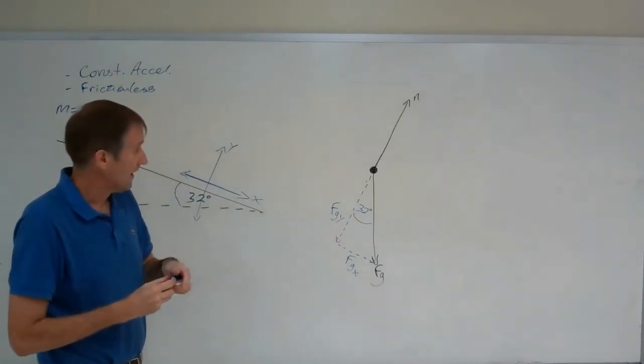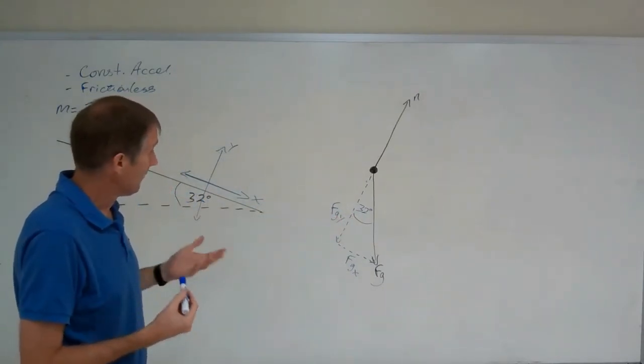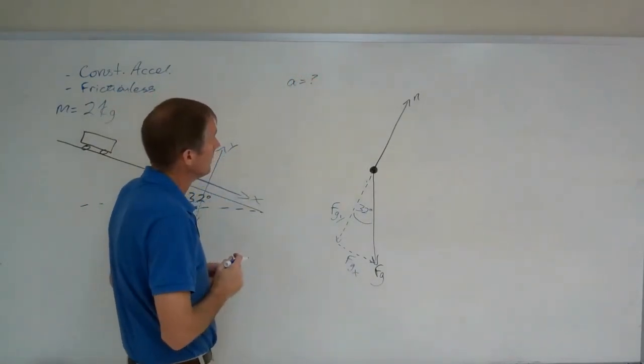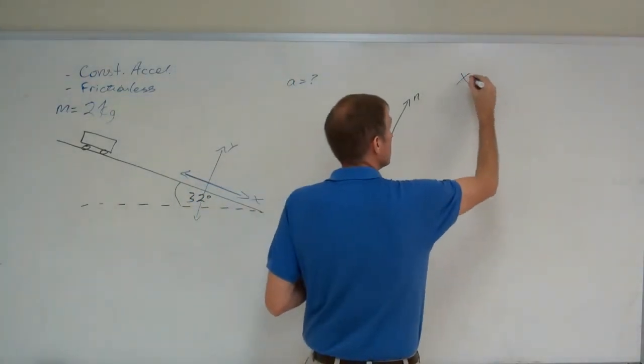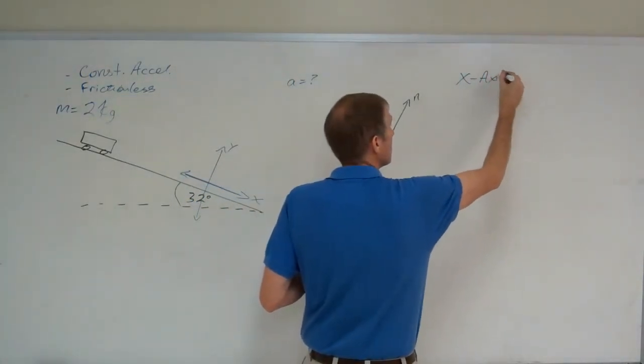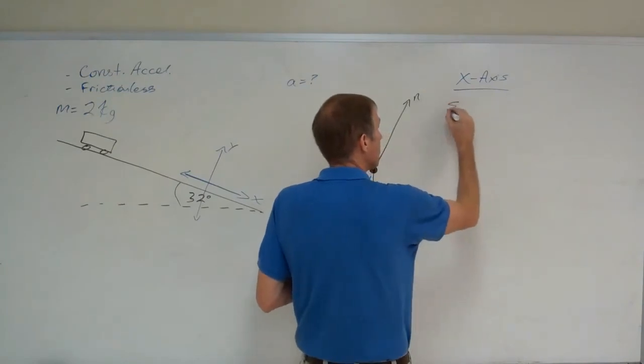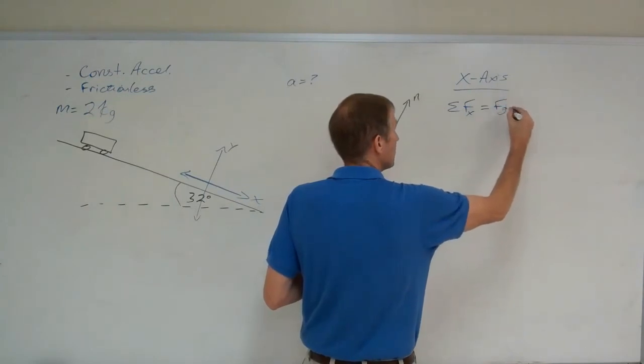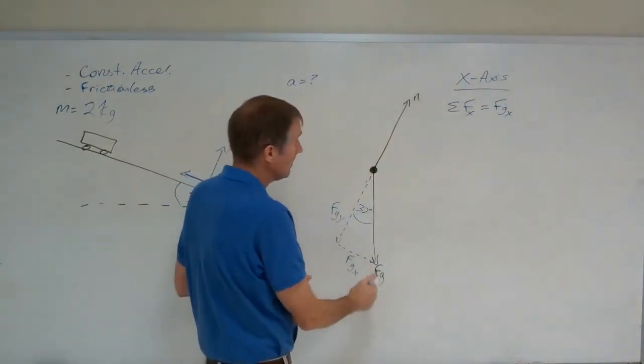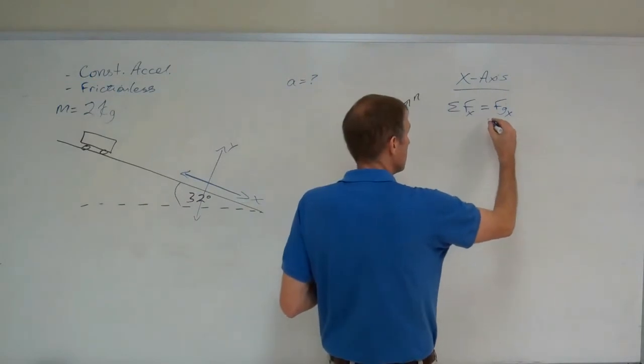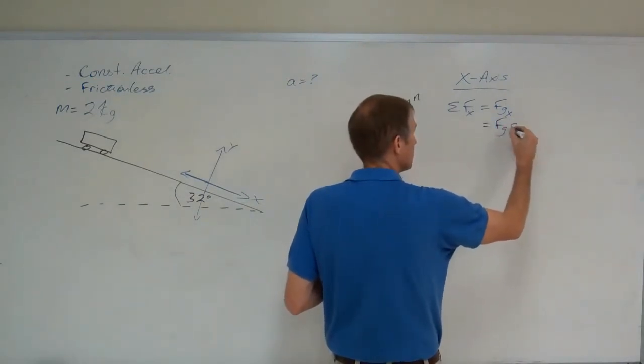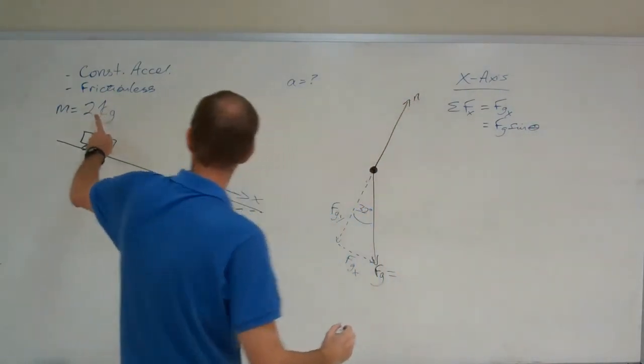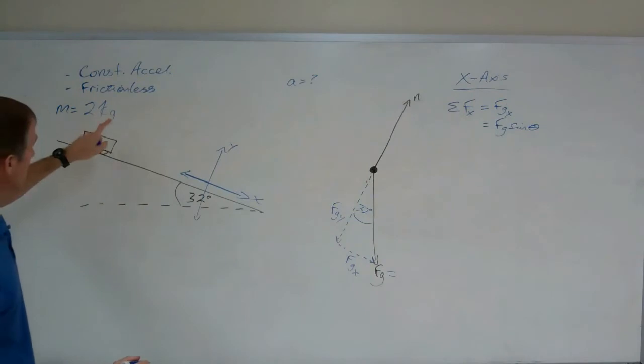Now, to find the acceleration, that's what we're looking for. The acceleration in the X axis, the net force in the X axis is equal to FGX. FGX equals FG times the sine of the angle.